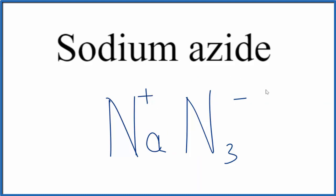1 plus, 1 minus. Those charges balance out. They give us a net charge of 0. So this is the formula for sodium azide, NaN3. This is Dr. B with the formula for sodium azide. Thanks for watching.